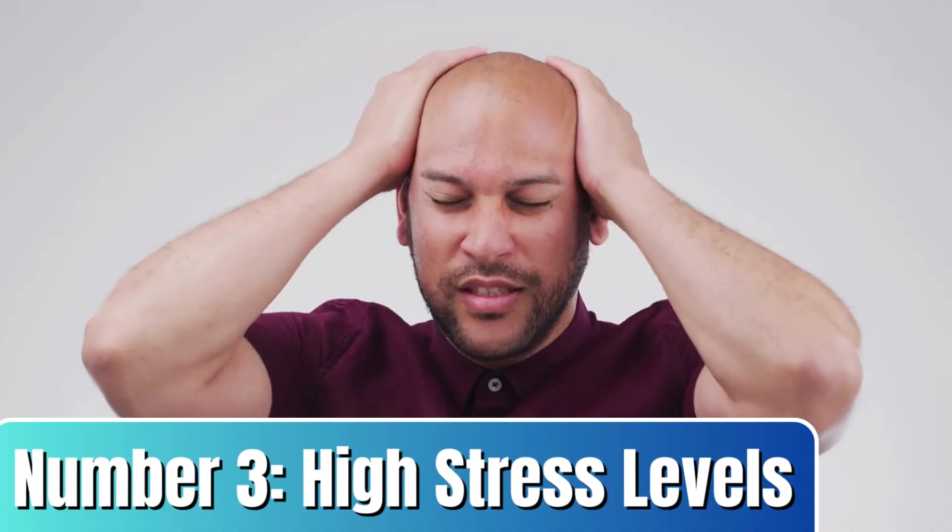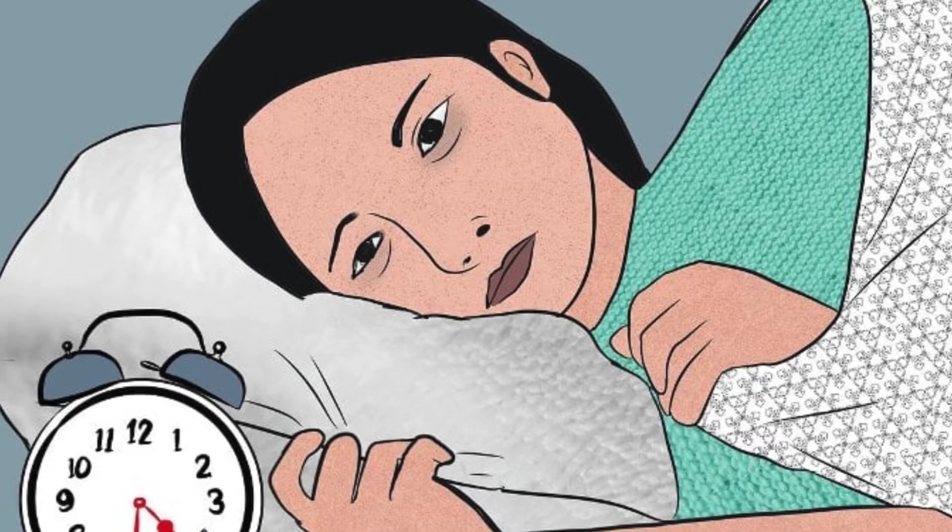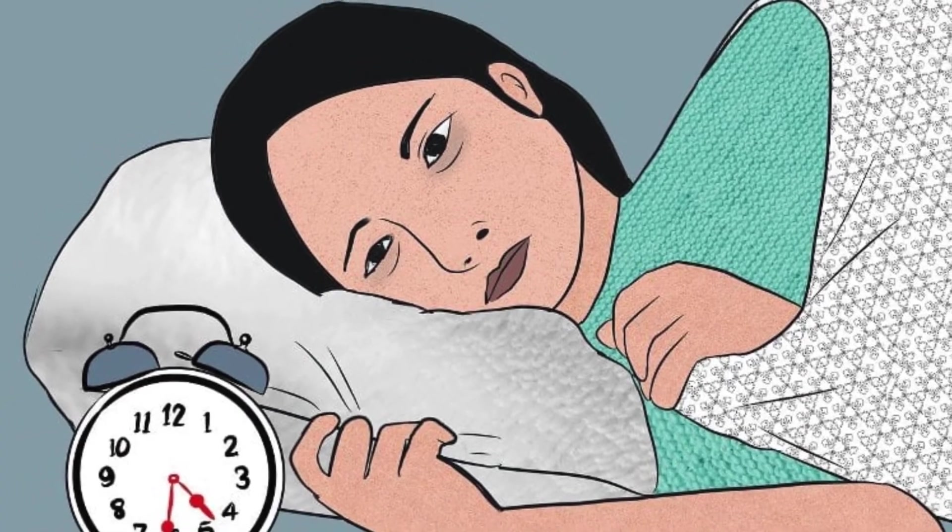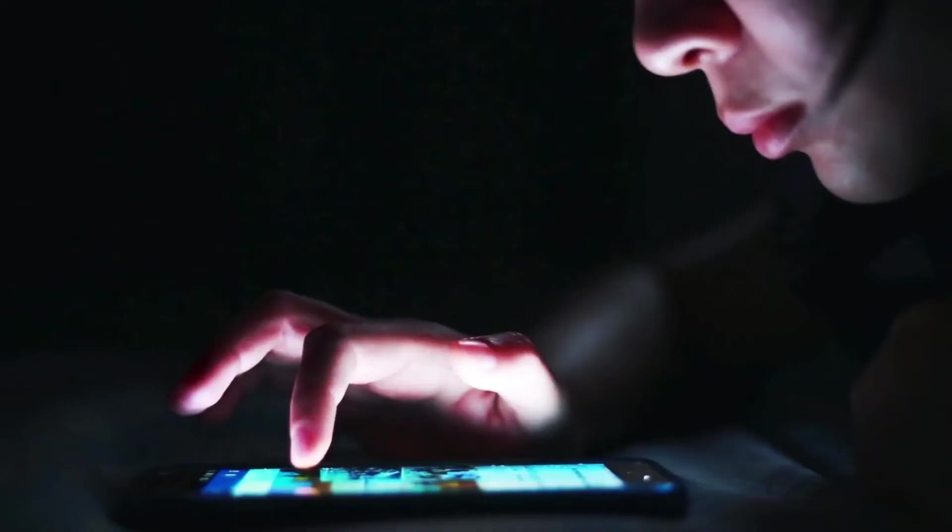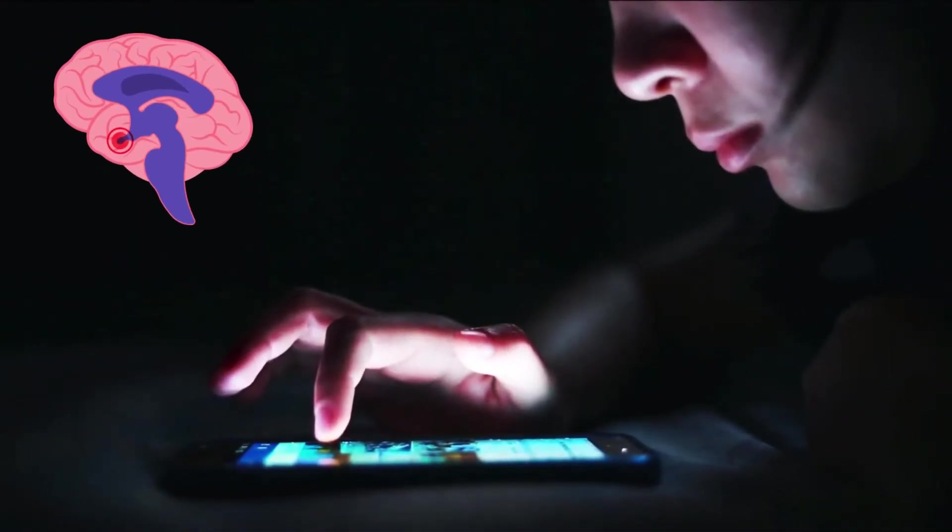Number 3. High stress levels. A 2021 study shows that using blue light-emitting devices before bed increased stress hormones by 15% even in participants who didn't experience sleep disturbances before. This suggests that blue light itself might trigger stress pathways in the body.